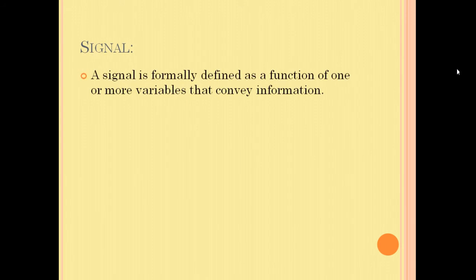A signal is formally defined as a function of one or more variables that convey information. The speech signal carries information which is varying with respect to time. So I can say that speech signal is a one dimensional signal as it is varying with respect to time.